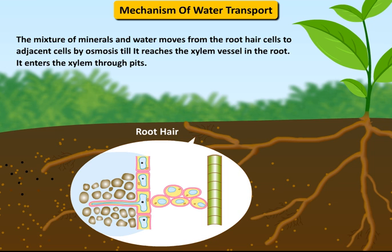The mixture of minerals and water moves from the root hair cells to adjacent cells by osmosis till it reaches the xylem vessel in the root. It enters the xylem through pits.